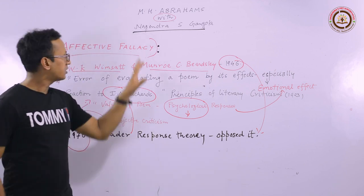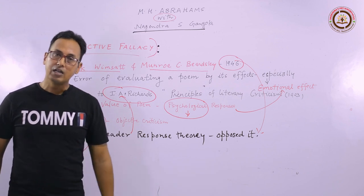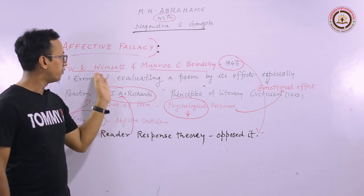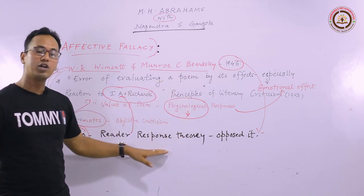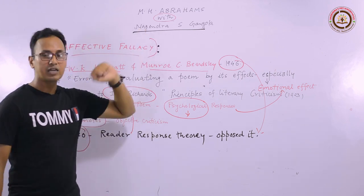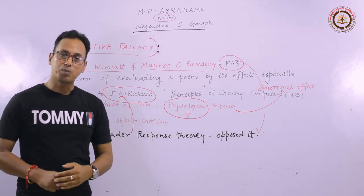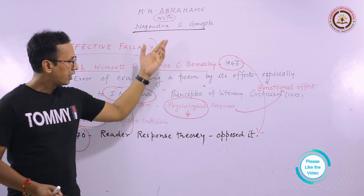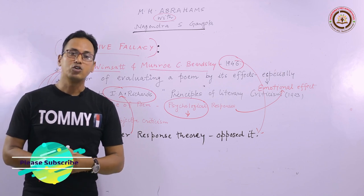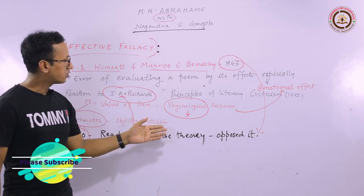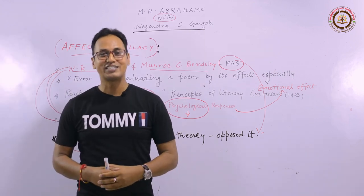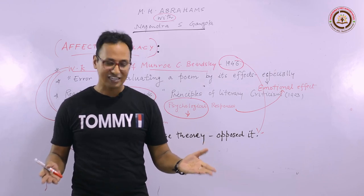So, dear students, affective fallacy is where you commit an error due to the emotional effect, and it was given by Beardsley and Wimsatt. I hope you are enjoying this M.H. Abrams series. Please keep liking, sharing, and subscribing to this channel so that all the videos can reach you very fast. Thank you, have a nice day, and see you very soon with a new video.